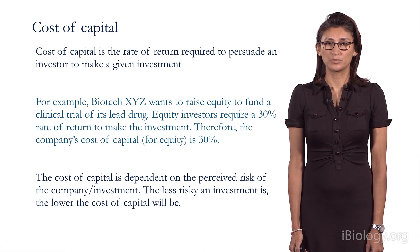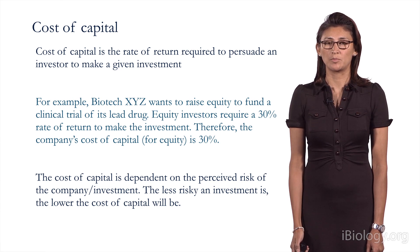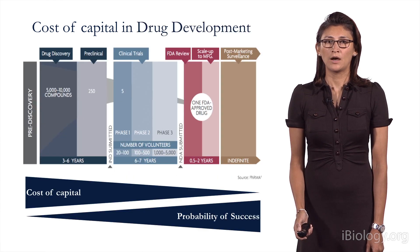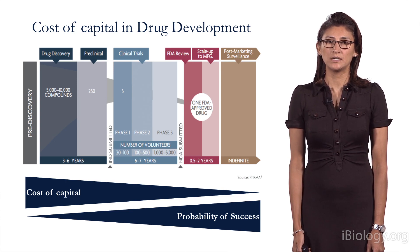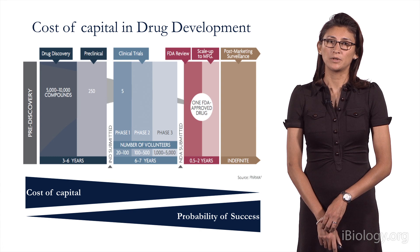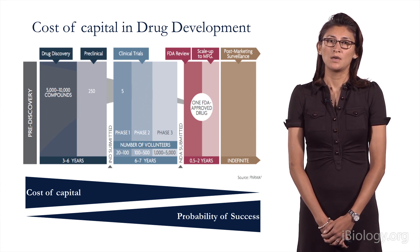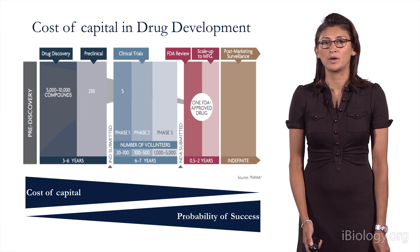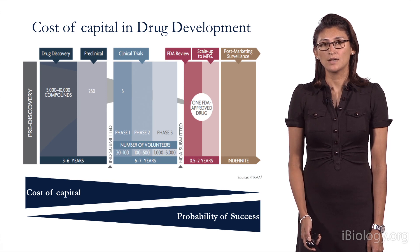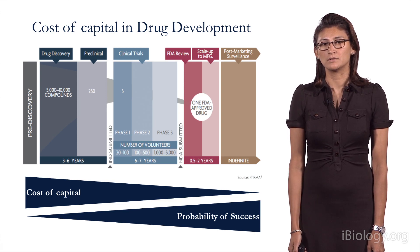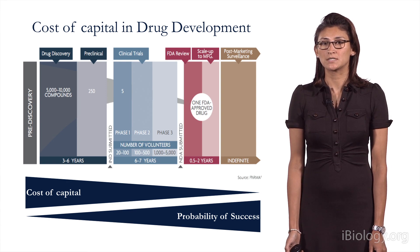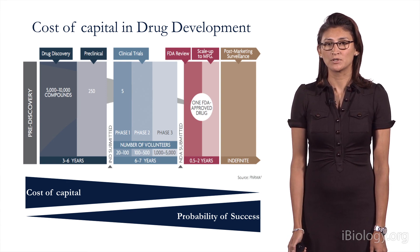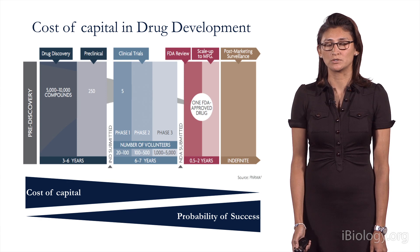The cost of capital is dependent upon the perceived risk of the company or the investment. The less risky an investment is, the lower the cost of capital would be. In drug development, you start with thousands of compounds at the very early stages, which are worked through the funnel of clinical development until, hopefully, at least one successful compound is approved by the FDA. As the drug works its way through the clinical development cycles, it's being de-risked and the probability of success is going up. The cost of capital goes down as the probability of success increases, so they are indirectly proportional to each other.